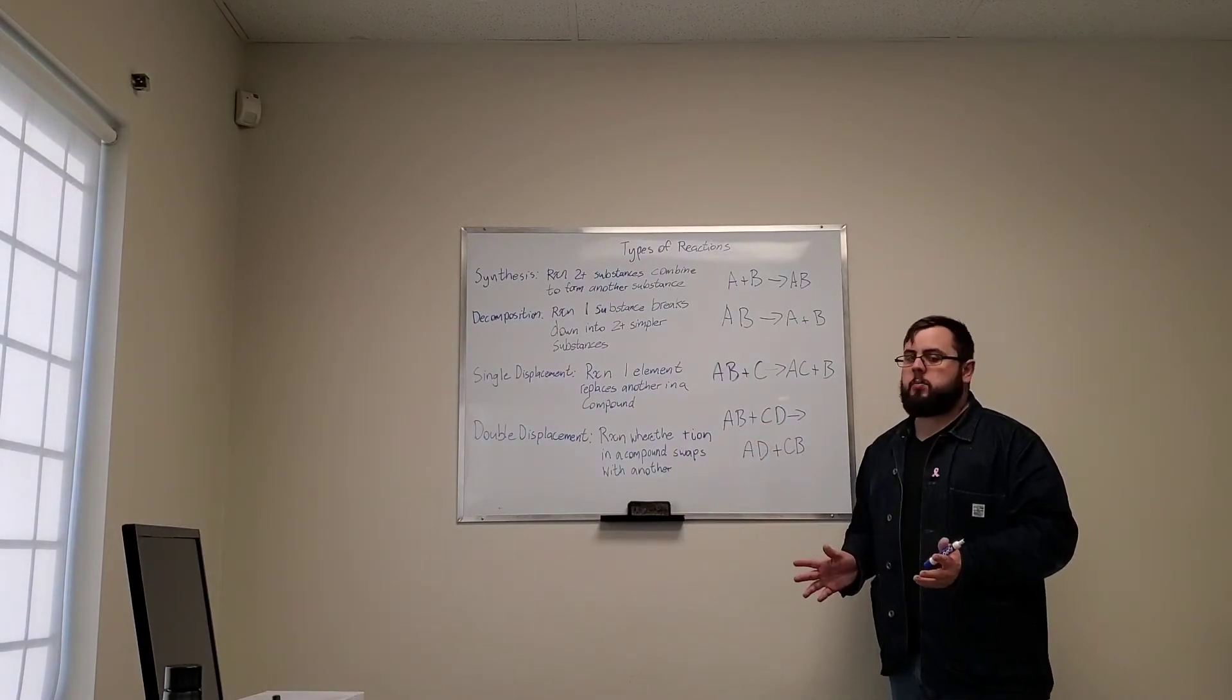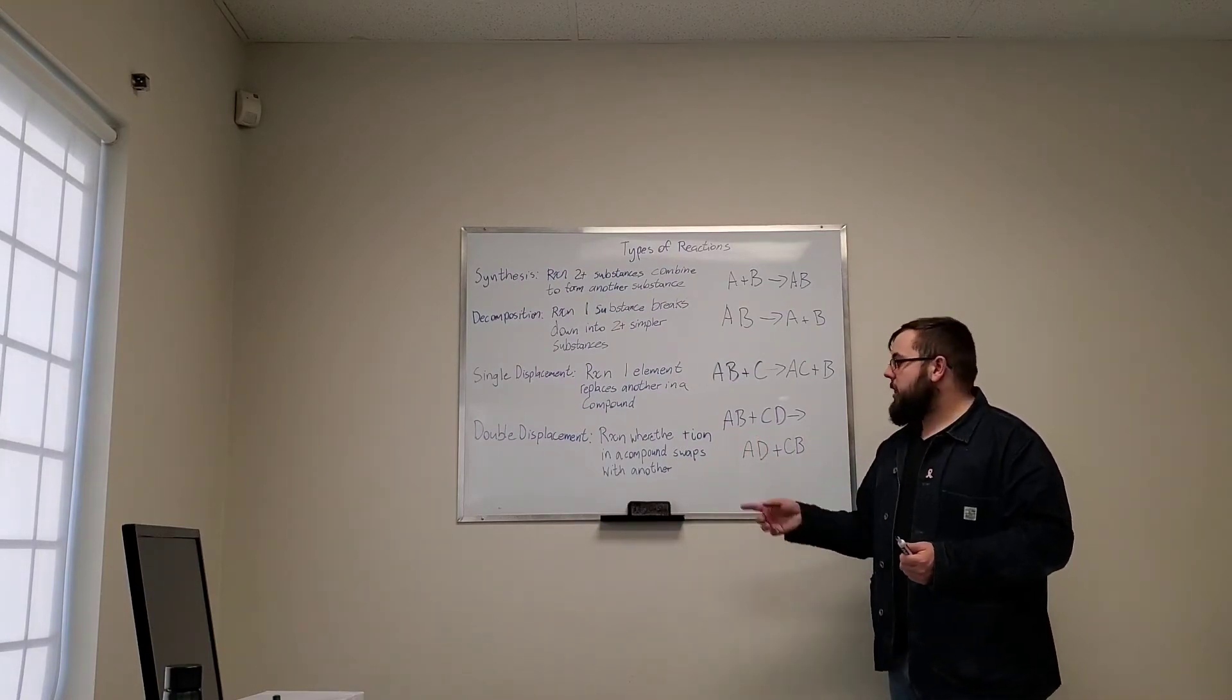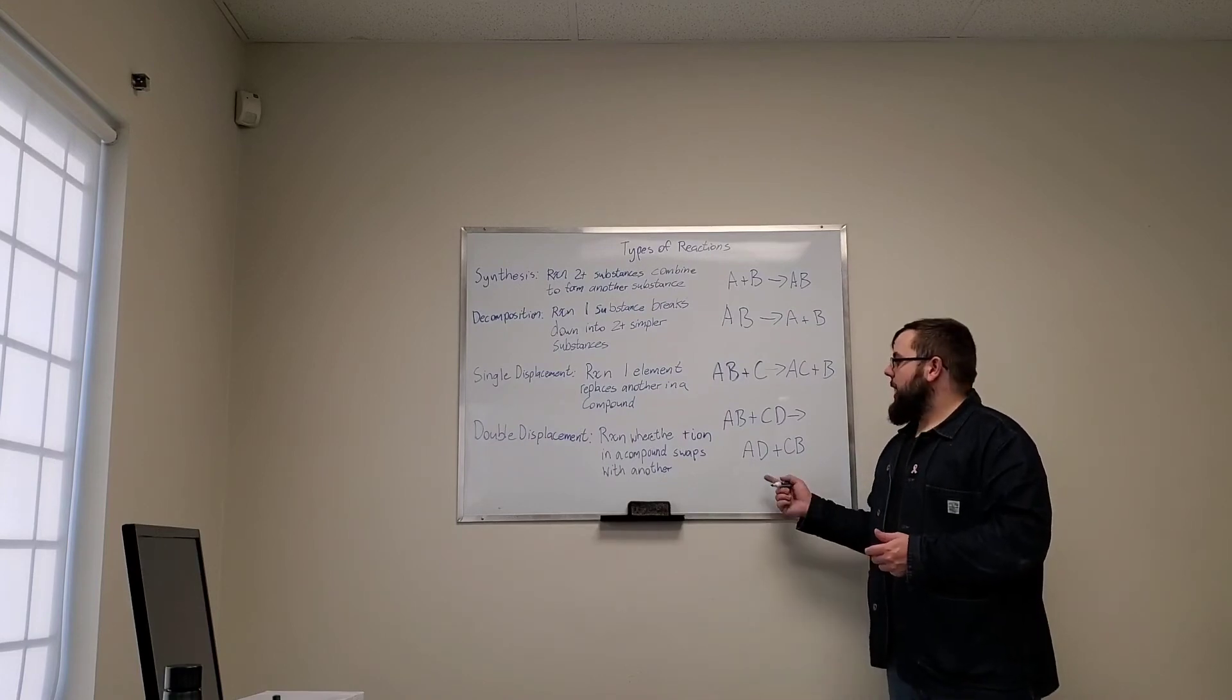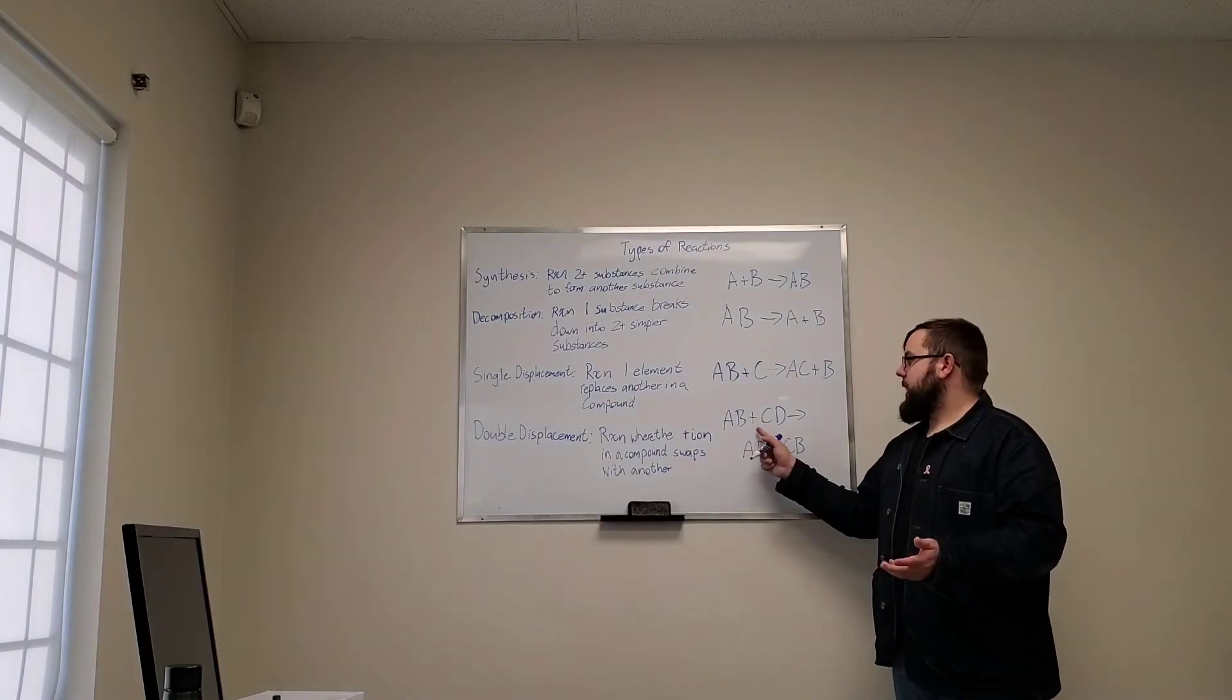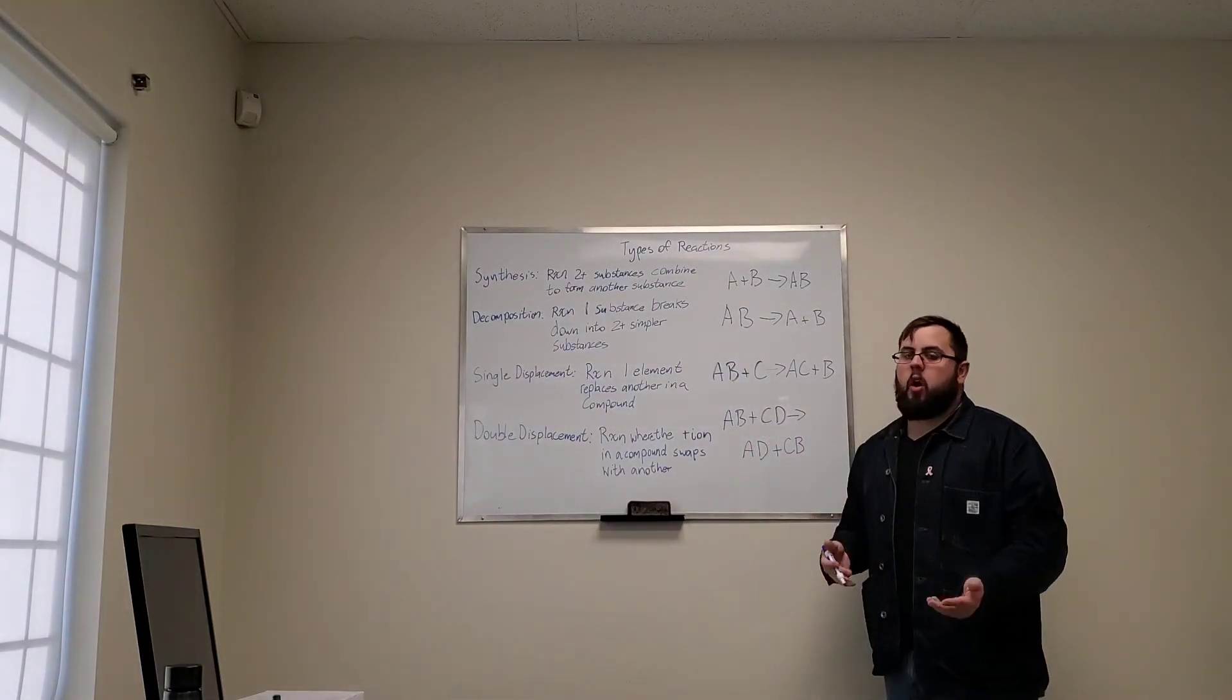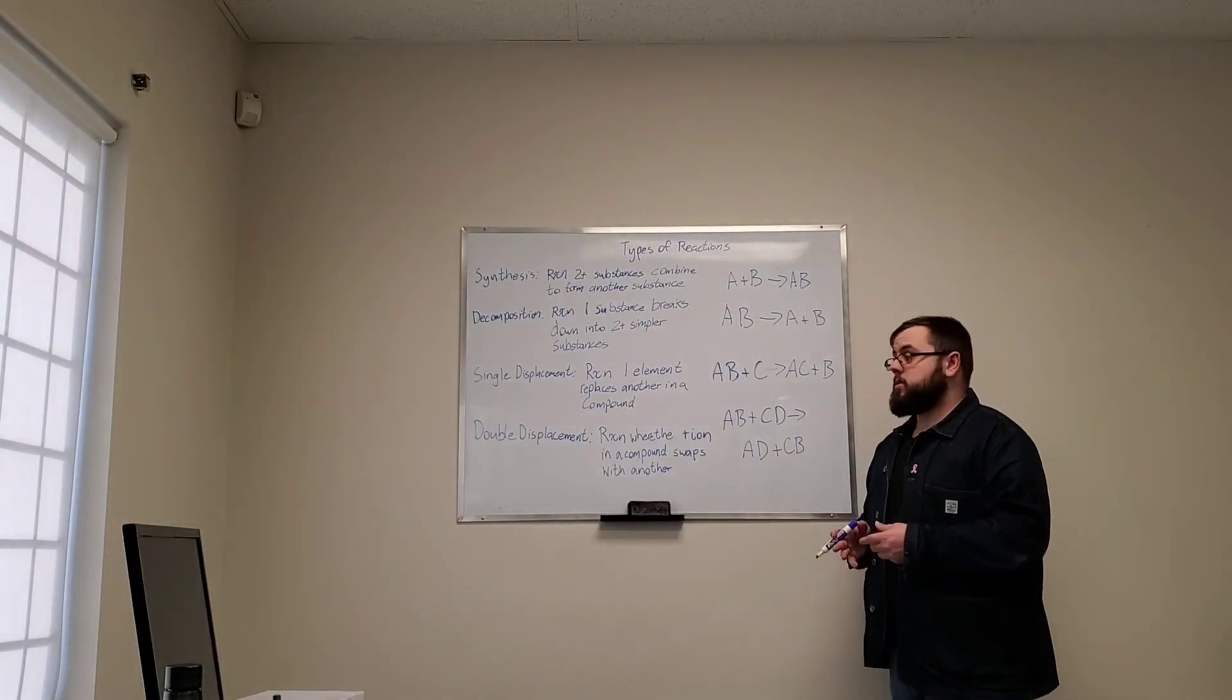It's not possible because both A and C are the positive ions, while B and D are the negative ions. We know that A and C are metals, and metals are positive ions. B and D would be non-metals, and non-metals tend to be negative ions.